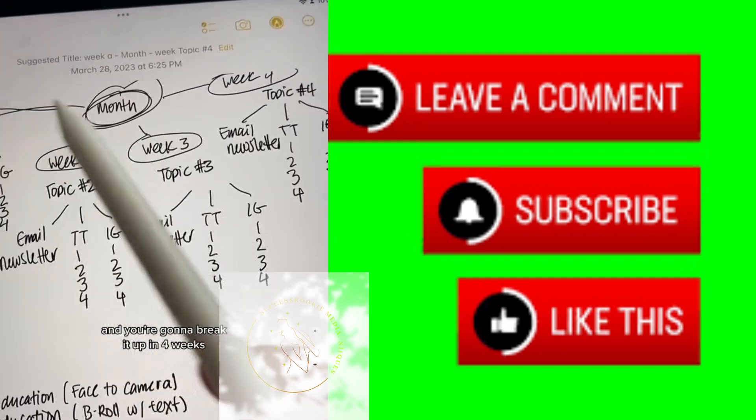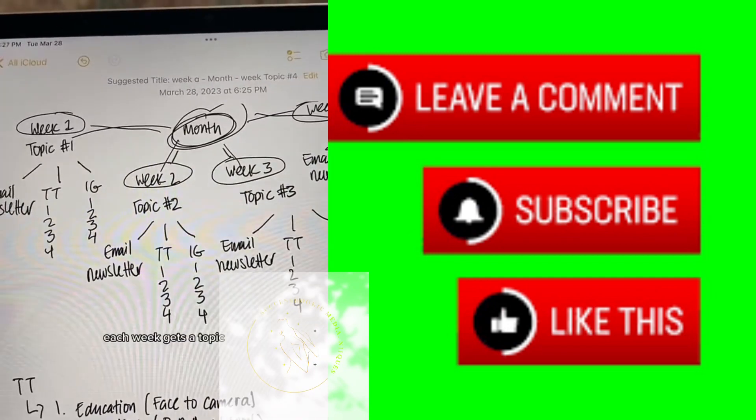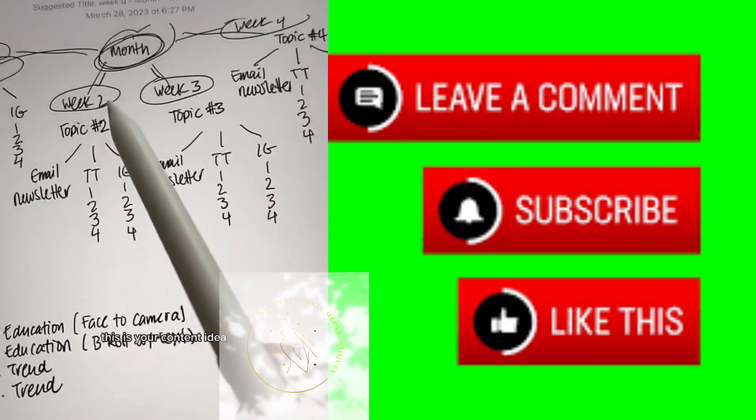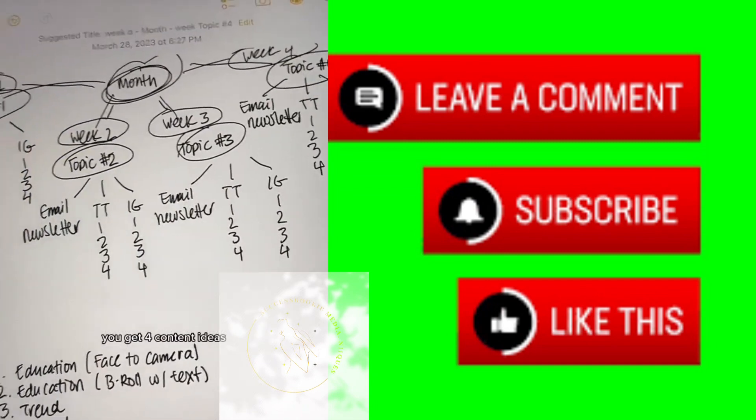You're going to take your month, and you're going to break it up in four weeks. Each week gets a topic. This is your content idea. You get four content ideas, break it up between the week.